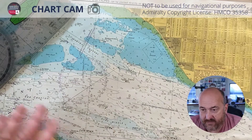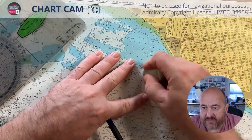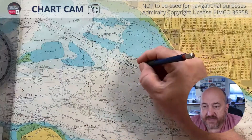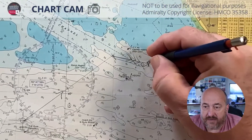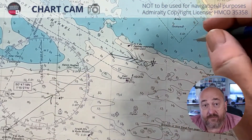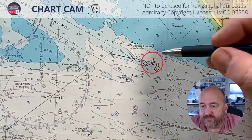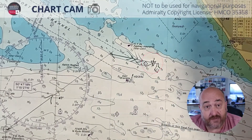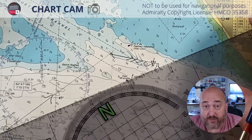We can rub away the remaining bit of line just to keep ourselves tidy. That basically is our estimated position — we put a triangle around the end of that line, and that's our EP. We could put a time by it; if we were navigating we'd put a time by it, so that's where we estimated we would be at that time.